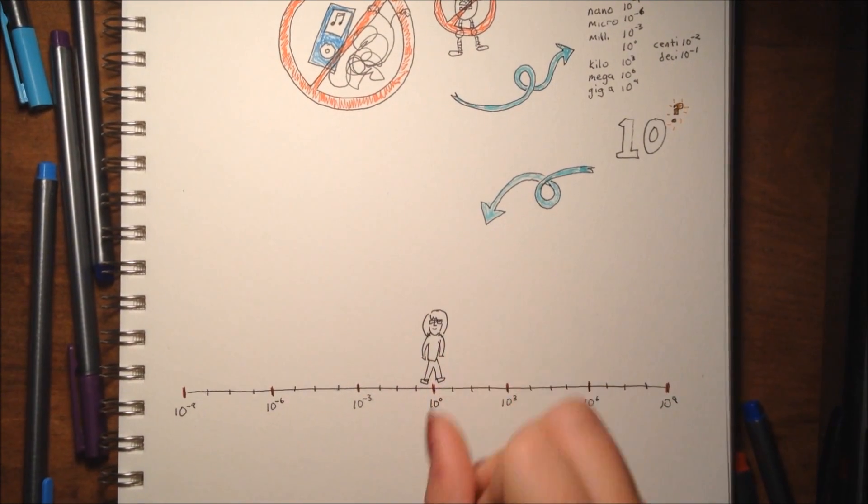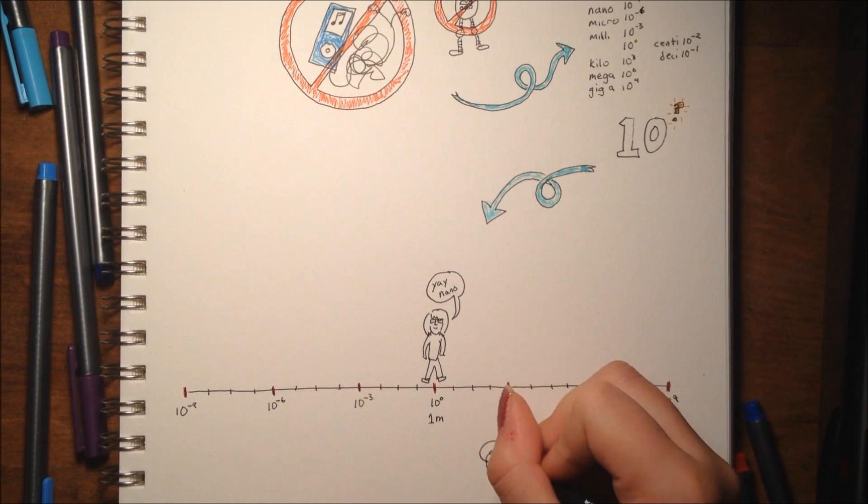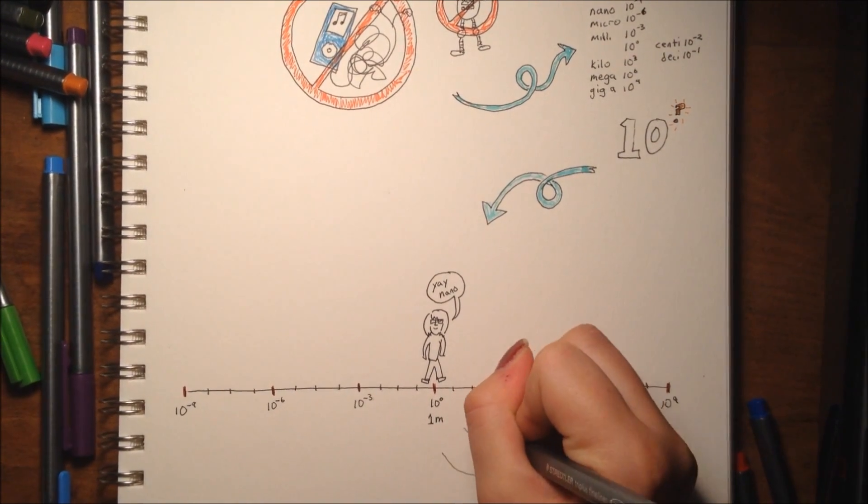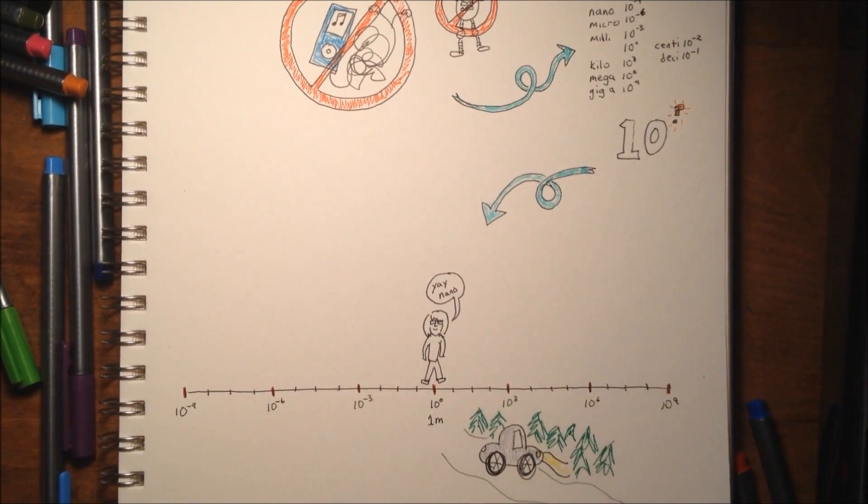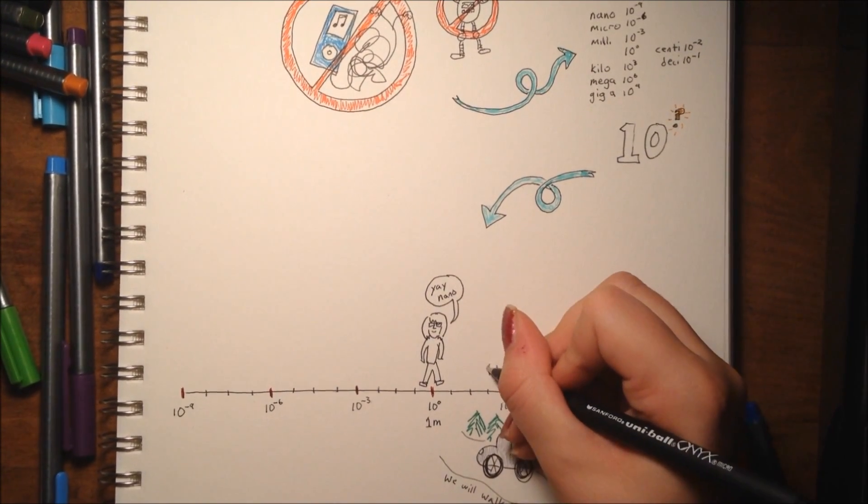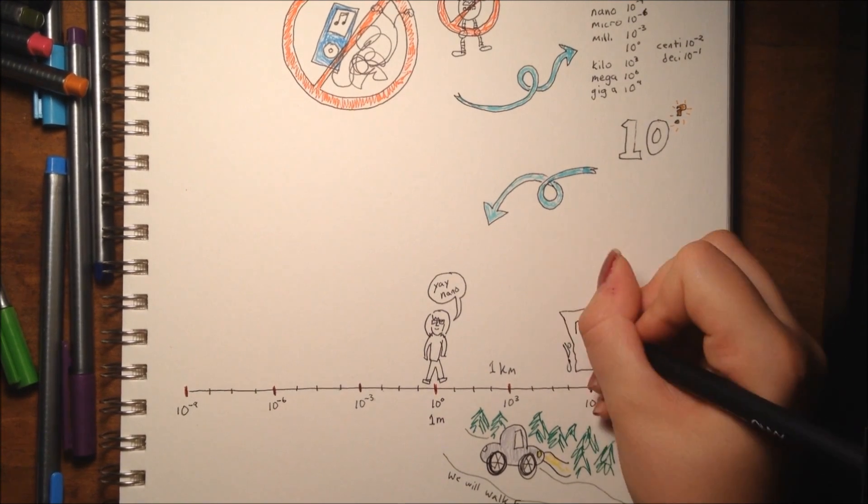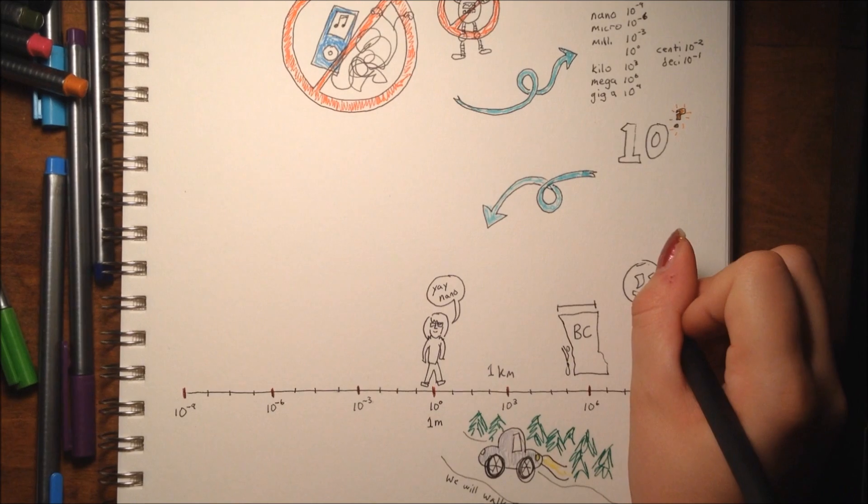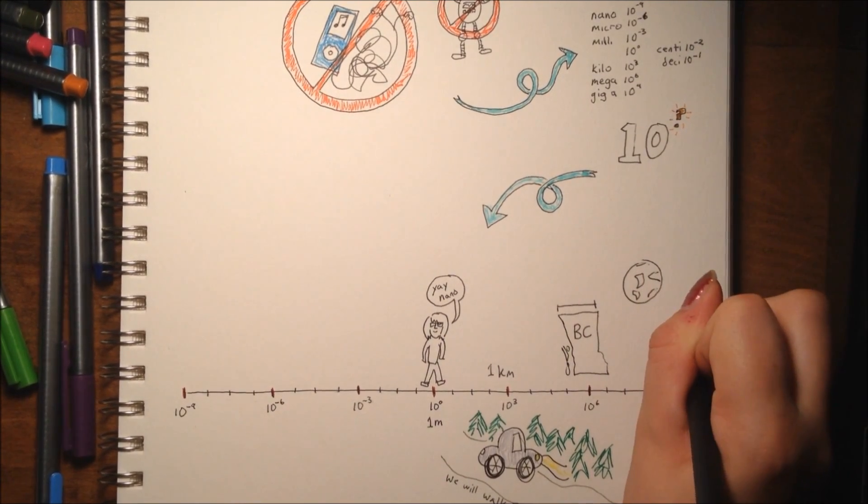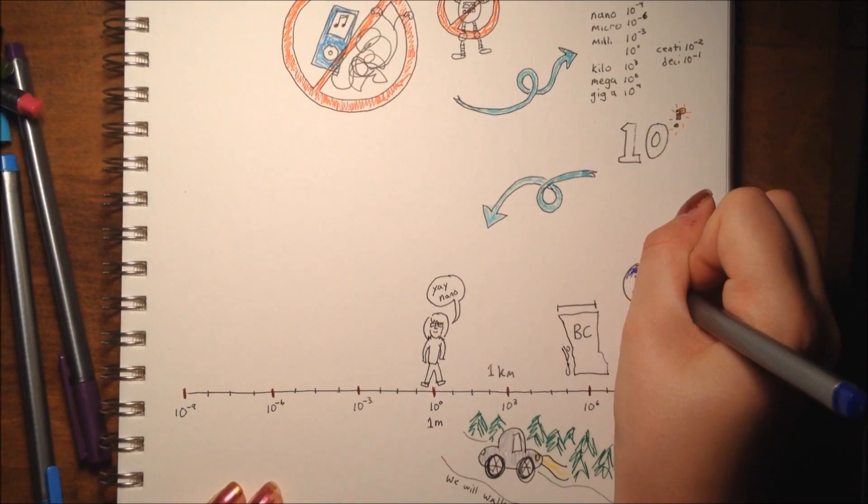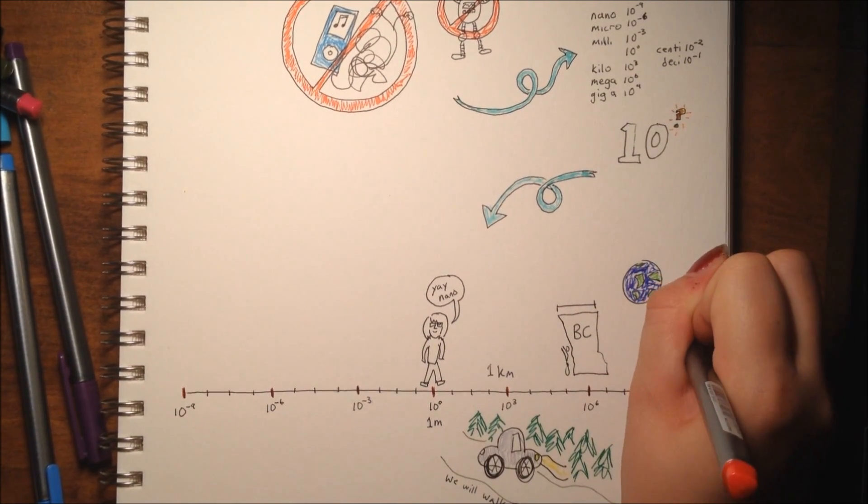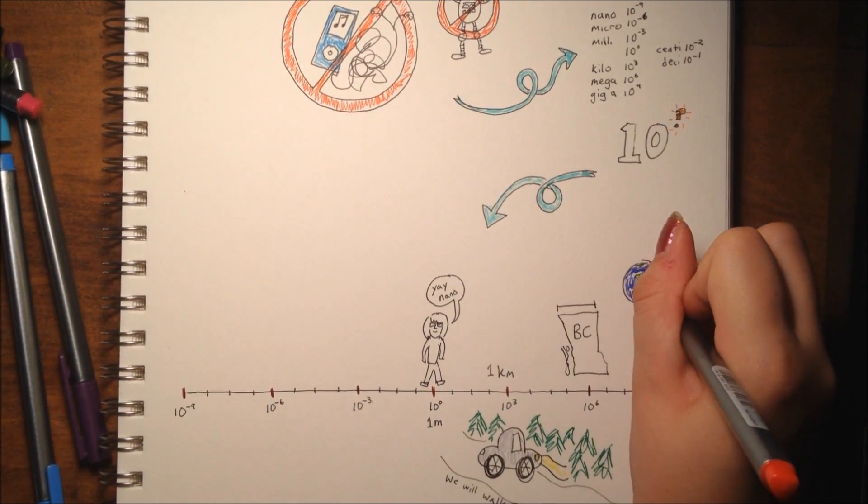10 to the power of 3 is a kilometer, which we're pretty familiar with, especially from driving around. Once we go up to 10 to the power of 6, or a thousand kilometers, we're about the width of BC. However, if we go all the way to 10 to the power of 9, one billion meters, or 100,000 kilometers, that's the distance to the moon, and back, and halfway back again.